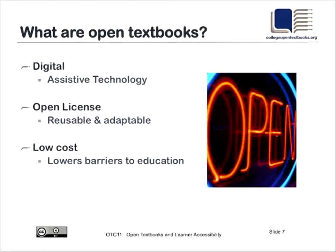Open textbooks are digitally formatted textbooks, often available also in a printed format for a low fee or printed out by the user. The digital component is really an important piece of being able to work well with assistive technology, although there are guidelines that need to be observed to make these digital formats effective for assistive technology. Secondly, an open textbook has an open license, which allows you as an instructor to adapt materials, reuse them, and share them with other instructors and your students.